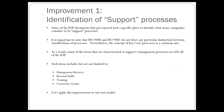The first improvement we're going to apply is to identify what the support processes are. Some IOP documents that get rejected don't have a specific place to identify what those support processes are and how they interface. When we refer to support processes, we're referring to things like management review, internal auditing, training, and corrective action. These are things you're required to do as part of an ISO 9001:2015 quality management system — so they are part of your system and therefore part of your processes.